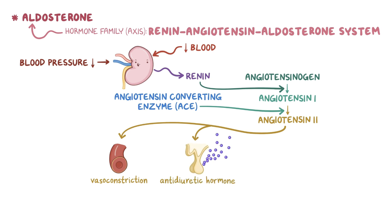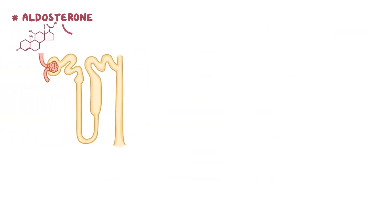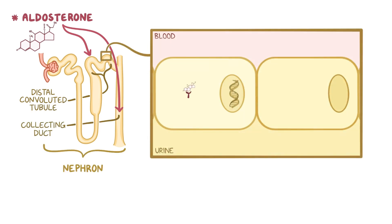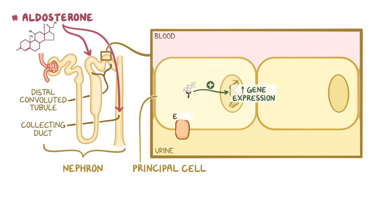In the adrenal glands, angiotensin 2 triggers the secretion of aldosterone. In the kidneys, aldosterone affects cells along the distal convoluted and collecting tubule of the nephron. It binds to mineralocorticoid receptors in the cytoplasm of principal cells, forming an aldosterone-receptor complex. This complex is translocated to the nucleus, where it enhances gene expression of epithelial sodium channels (ENaC) and sodium-potassium ion pumps, leading to their increased synthesis and greater presence on the principal cell.